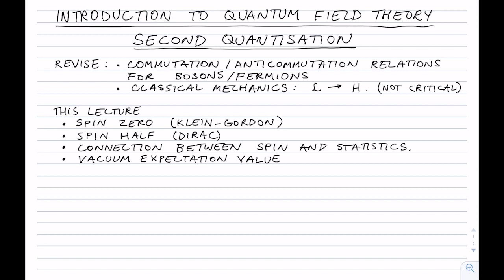We'll be using that, but if you don't really remember it, it doesn't matter too much because the final outcome doesn't really depend on understanding every little minute detail of that procedure. In this lecture, we're going to cover first spin zero particles described by the Klein-Gordon equation, and then spin half particles described by the Dirac equation.